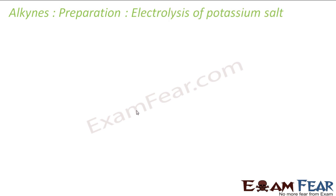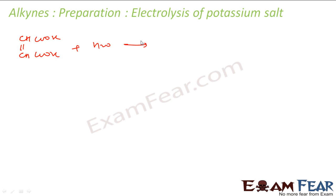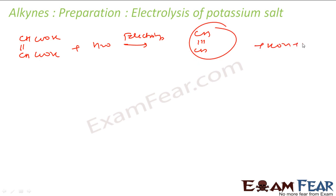The next method is electrolysis of potassium salt of fumaric acid. For example, take CHCOOk (potassium fumarate). You add water and do electrolysis. You get CH≡CH (acetylene), KOH, and hydrogen. This potassium fumarate is the starting material.